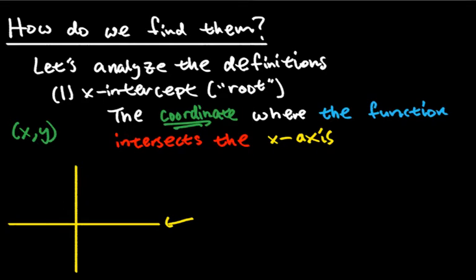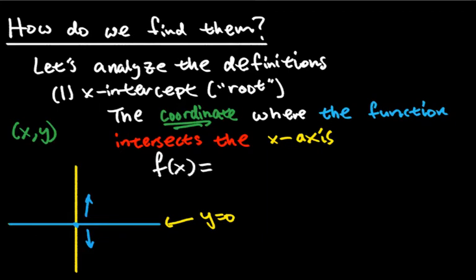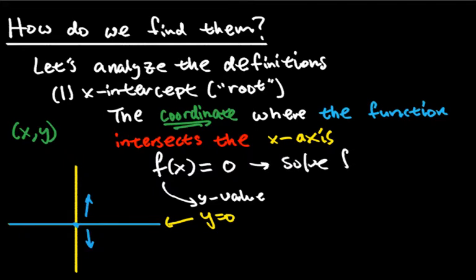That line describes where y is just zero. If you start at the origin — zero, zero — the y value there is zero. If you go up, y increases; if you go down, y decreases. But if you're anywhere on that level, y is still zero no matter what. So in other words, what you want to figure out is where f(x) equals zero — because f(x) is a y value — so set f(x) to zero and solve for x.